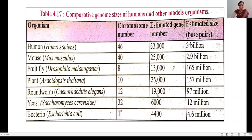The fourth organism is Arabidopsis thaliana, with 10 chromosomes, an estimated gene number of 25,000, and approximately 157 million base pairs. The next organism is the roundworm Caenorhabditis elegans, with 12 chromosomes, 19,000 estimated genes, and approximately 97 million base pairs. Yeast, Saccharomyces cerevisiae, has 32 chromosomes, about 6,000 estimated genes, and 12 million base pairs. Finally, the bacterium E. coli has 1 chromosome, 4,400 estimated genes, and approximately 4.6 million base pairs.